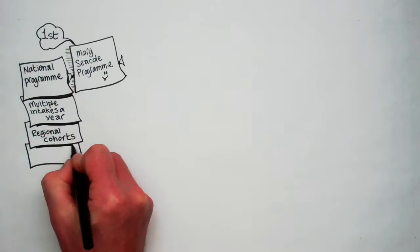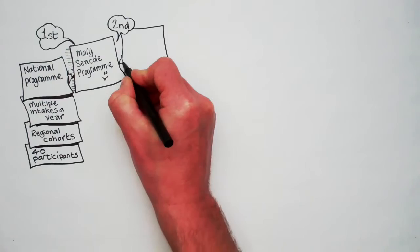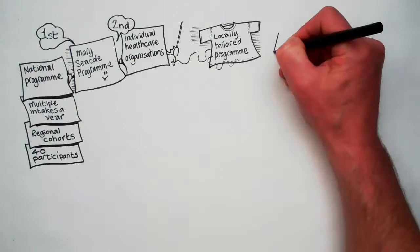You can undertake the programme in one of two ways. The first is as a national programme, with multiple intakes a year, forming into regional cohorts of about 40 participants in each. In the second format, the Academy will work directly with individual healthcare organisations to deliver a locally tailored programme.